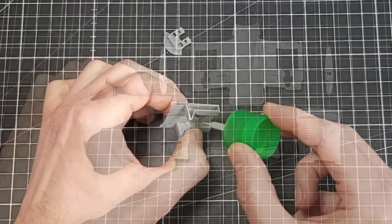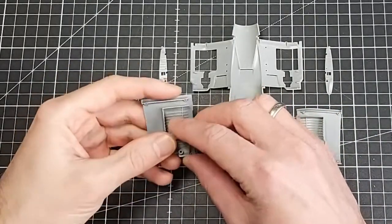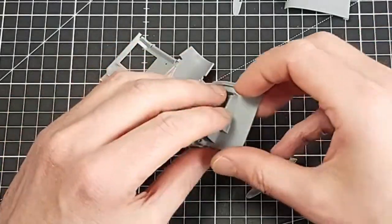After preparing the cockpit parts for painting, the assembly of the landing gear bay and wing structure continued.